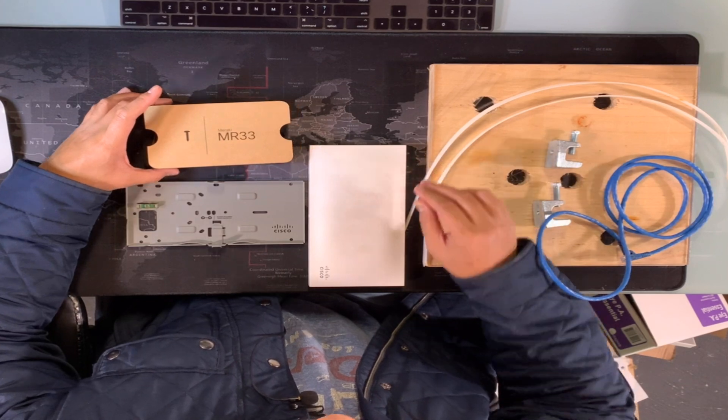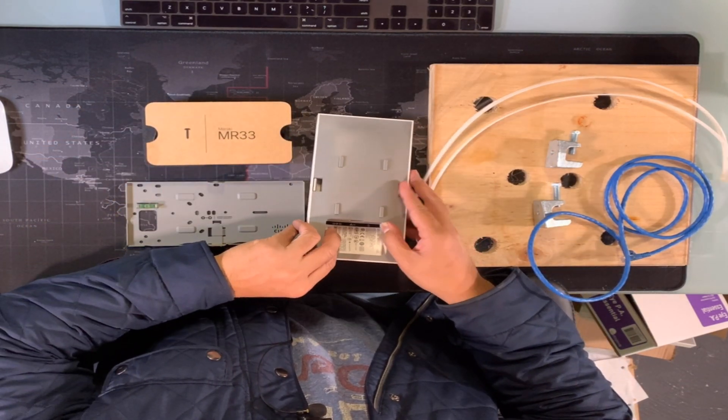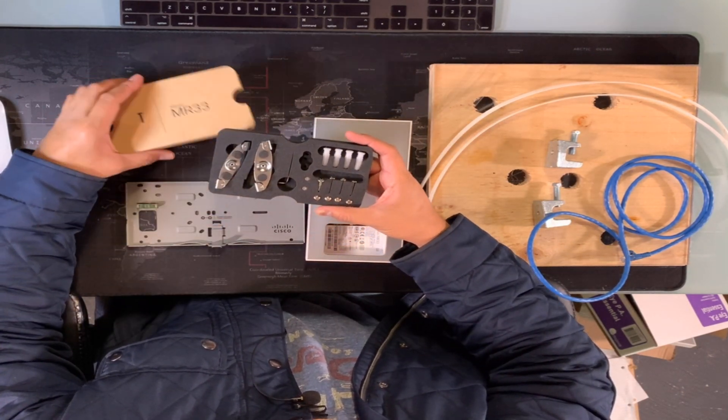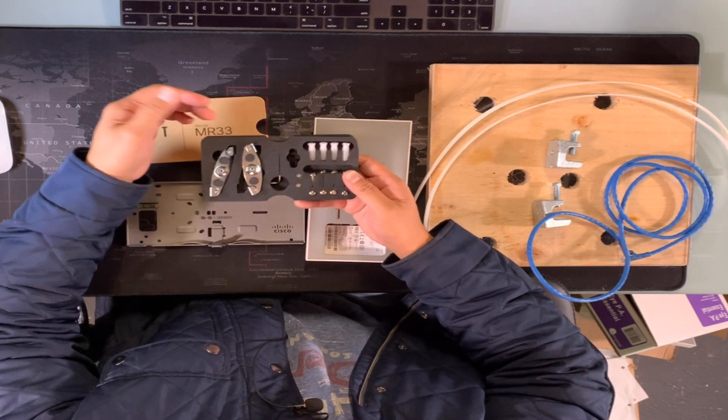Here's the MR-33 and the components that it comes with: the access point itself, your bracket, and then the accessories for the installation. In the installation kit it comes with your anchors, your wood screws.